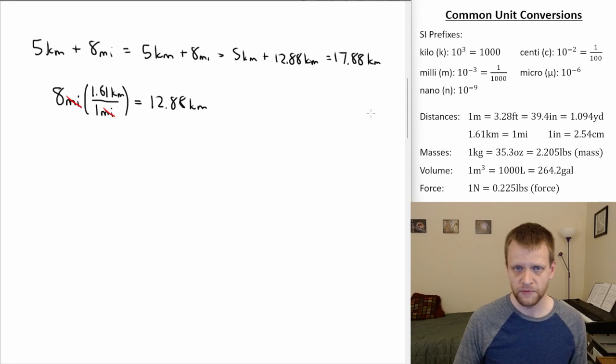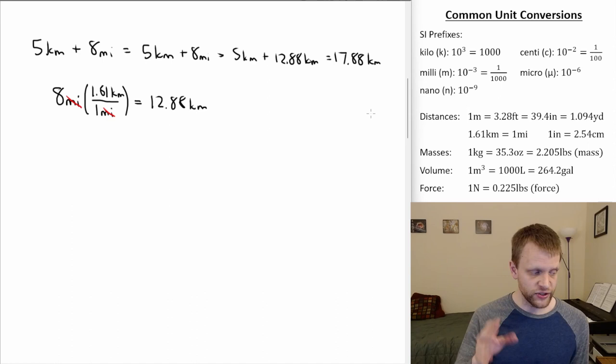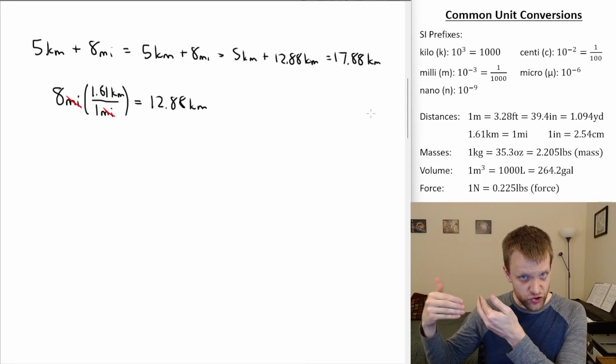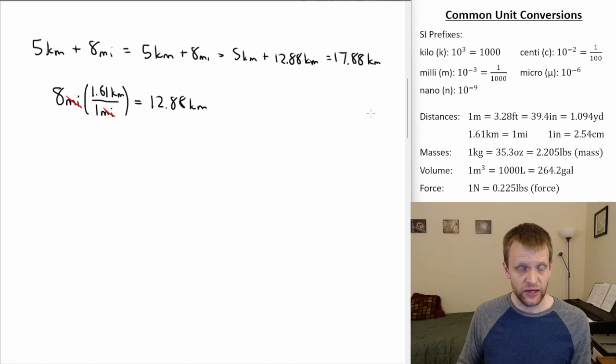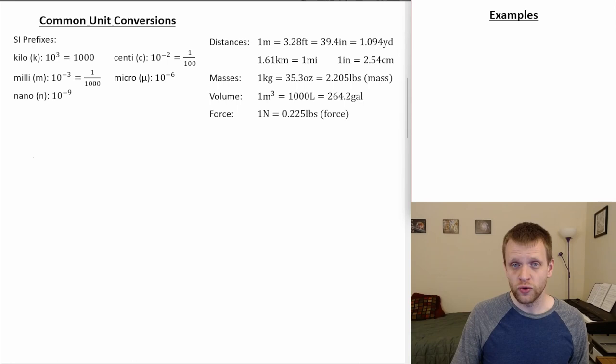That's a fairly straightforward unit conversion. When introducing conversion factors, the goal is to get the units we don't want to cancel out — units we're trying to get rid of should cancel in our conversion factors — and that should leave us with the units that we do want. Let's look at a few examples that require a few more steps and conversion factors.